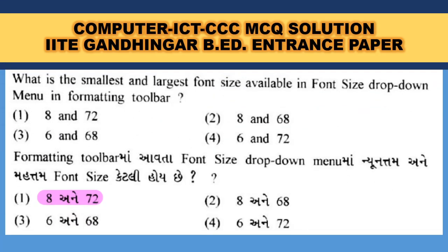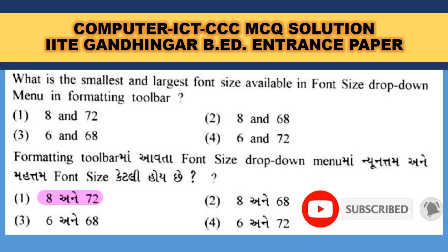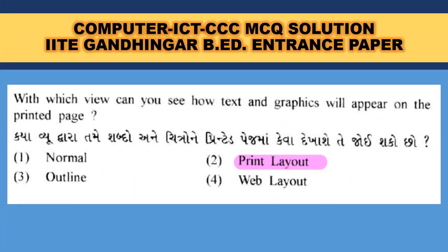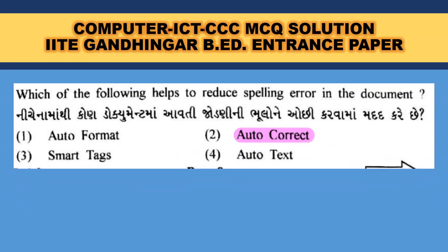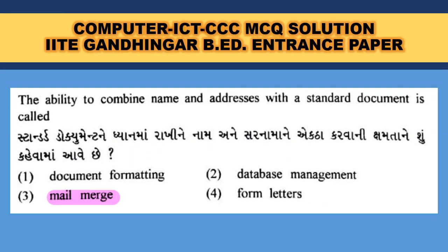What is the smallest and largest font size available in the font size drop-down menu in the formatting toolbar? From 8 to 72 points. With which view can you see how text and graphics will appear on the printed page? That is Print Layout. Which of the following helps to reduce spelling errors in the document? It is AutoCorrect — it automatically corrects spellings and mistakes. The ability to combine name and address with a standard document is called mail merge.